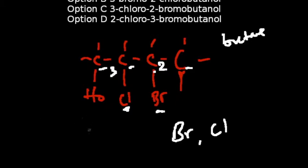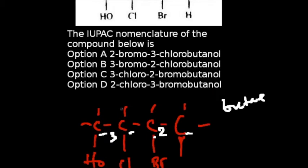And so the final name or the IUPAC name of this compound will be option A, which is 2-bromo-3-chlorobutanol.